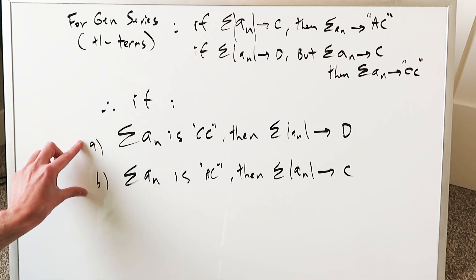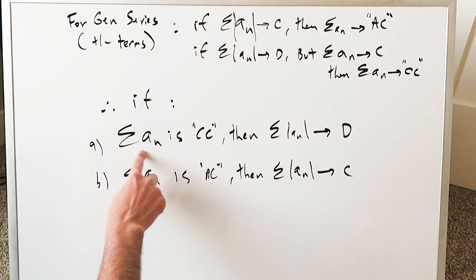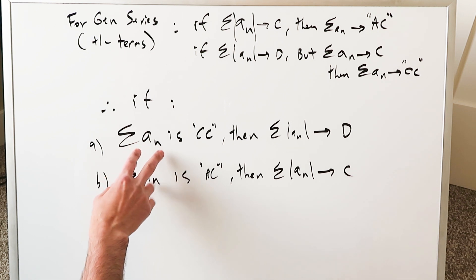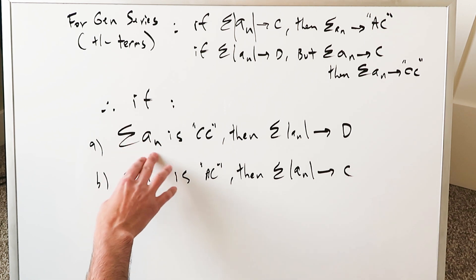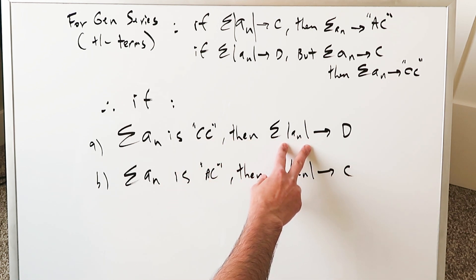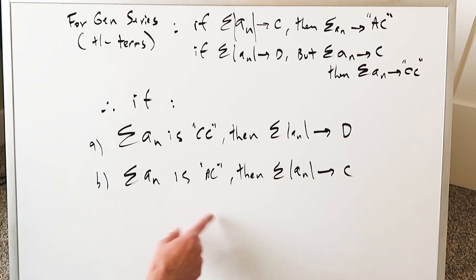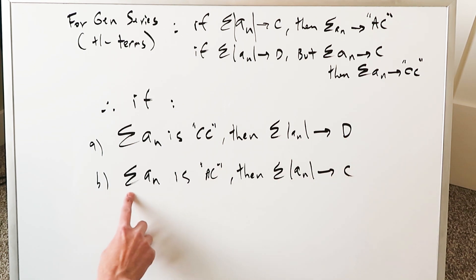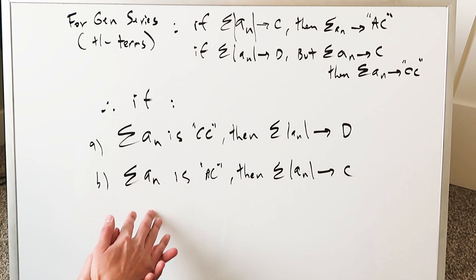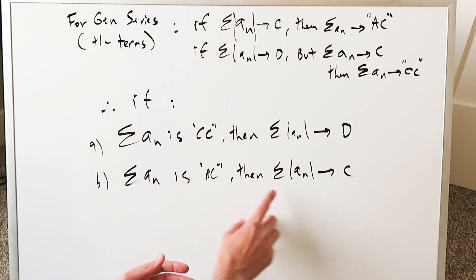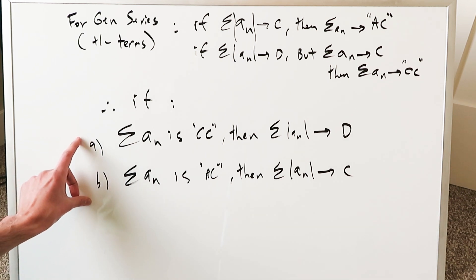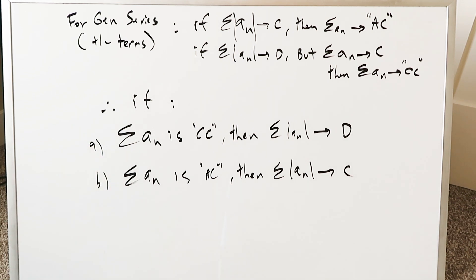In essence it boils down to these simpler statements. If someone tells you a series is conditionally convergent, then you know the corresponding absolute value series was divergent. Likewise, if a series — made up of any type of value, positive, negative, or alternating — is absolutely convergent, then the corresponding absolute value series is convergent. Keep those two specific sentences in mind as we look through each of these problems.